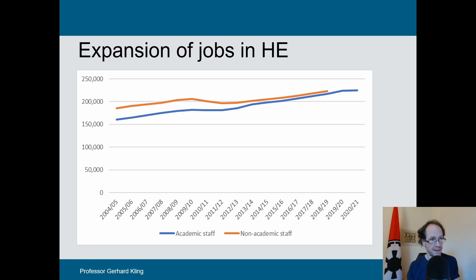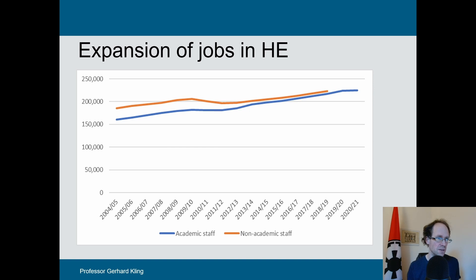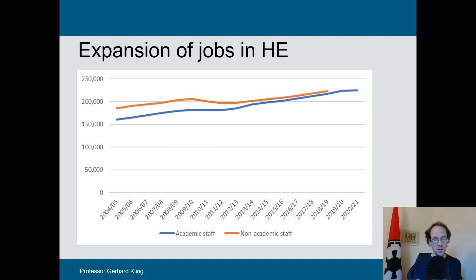At the same time, jobs are expanding in higher education. The numbers for academic staff are still going up, as are non-academic staff, though for the last few years the data for non-academic staff is not yet complete, which limits this analysis. But you see a steady increase in numbers throughout this period.